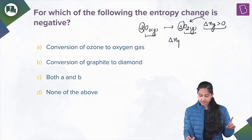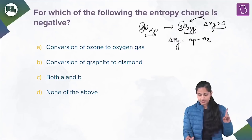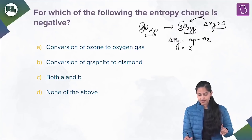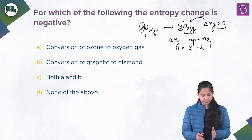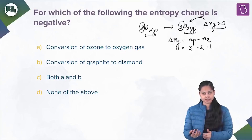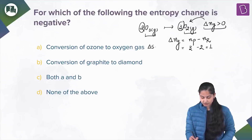Delta NG equals total gaseous moles of product minus total gaseous moles of reactant: 3 − 2 = 1, which is greater than zero. Therefore, for this reaction, entropy is increasing — delta S is positive.